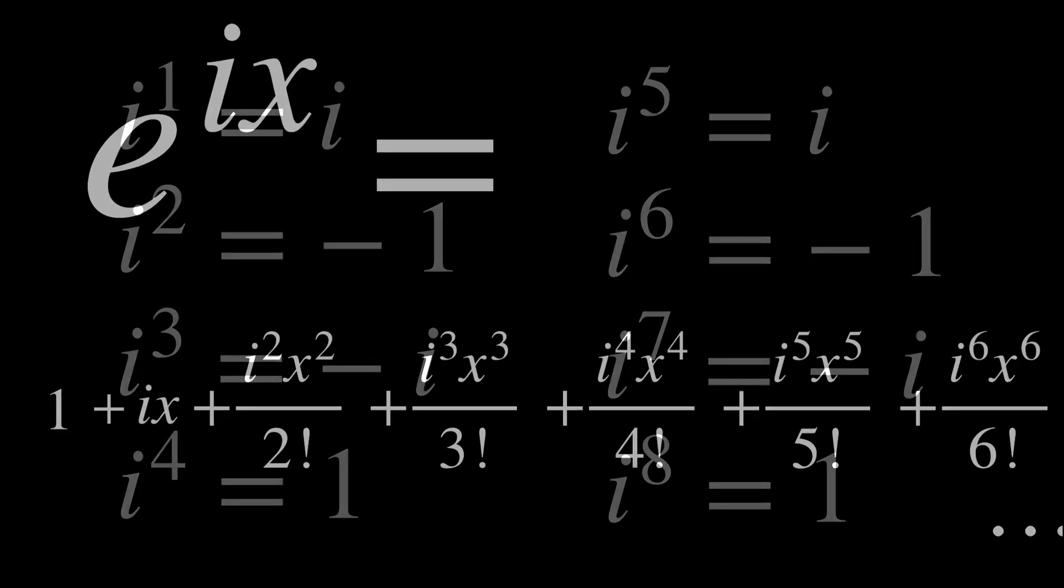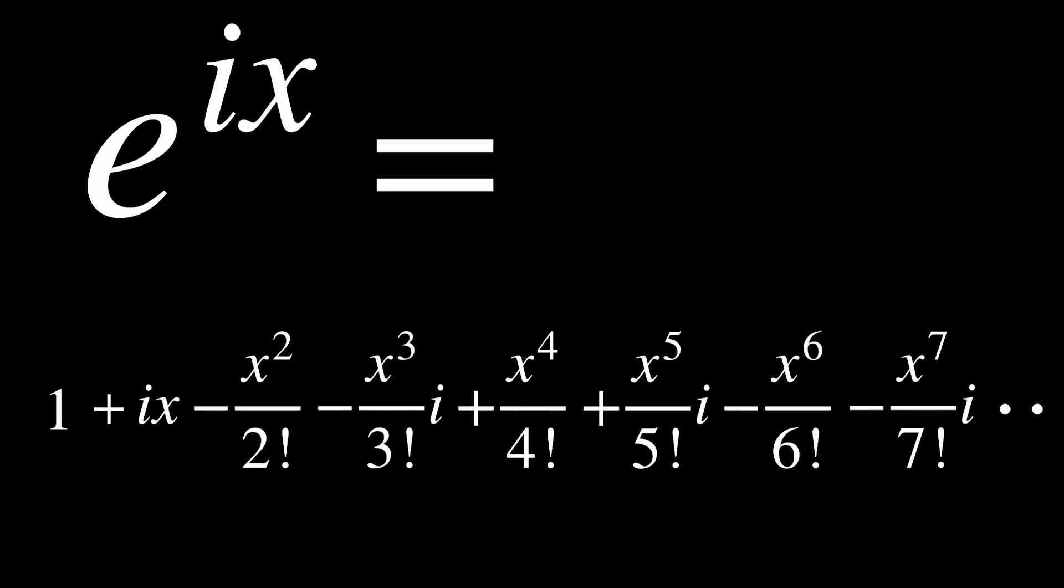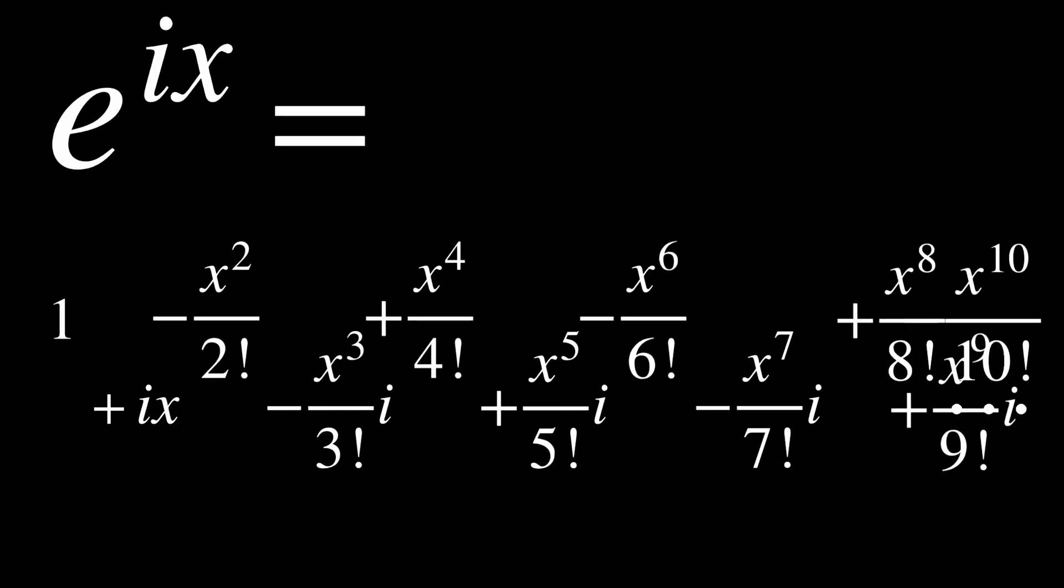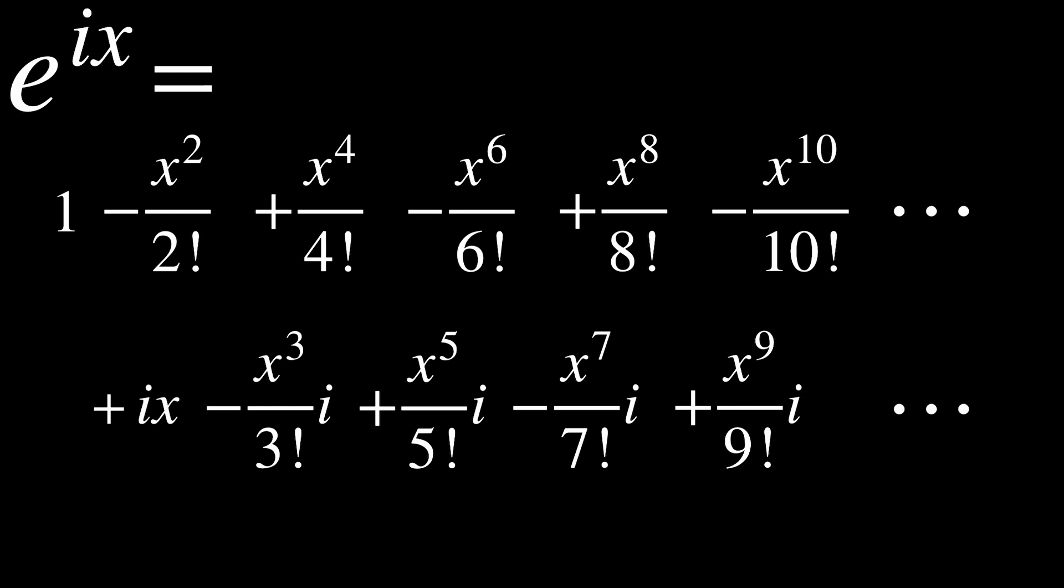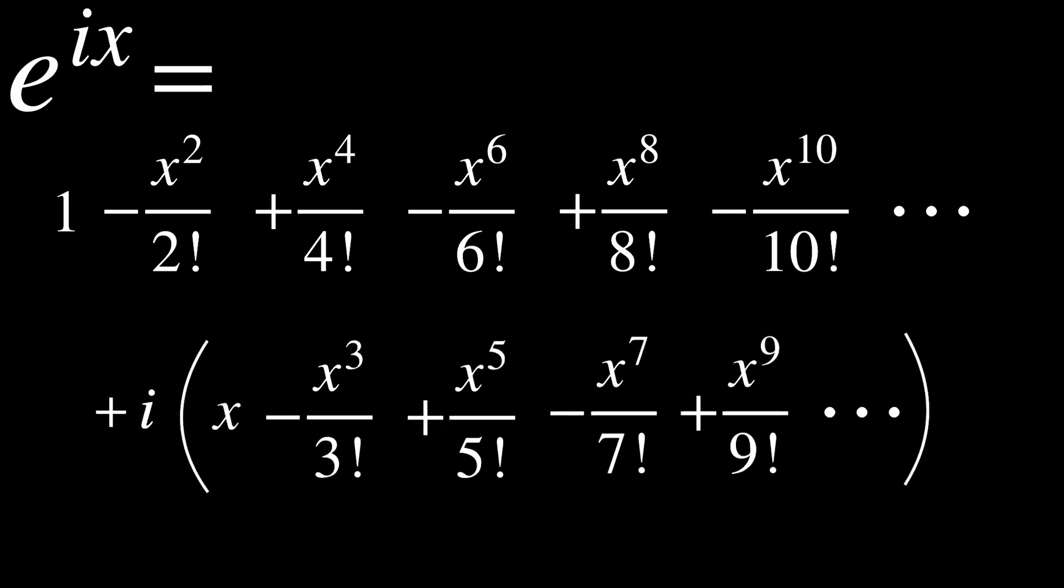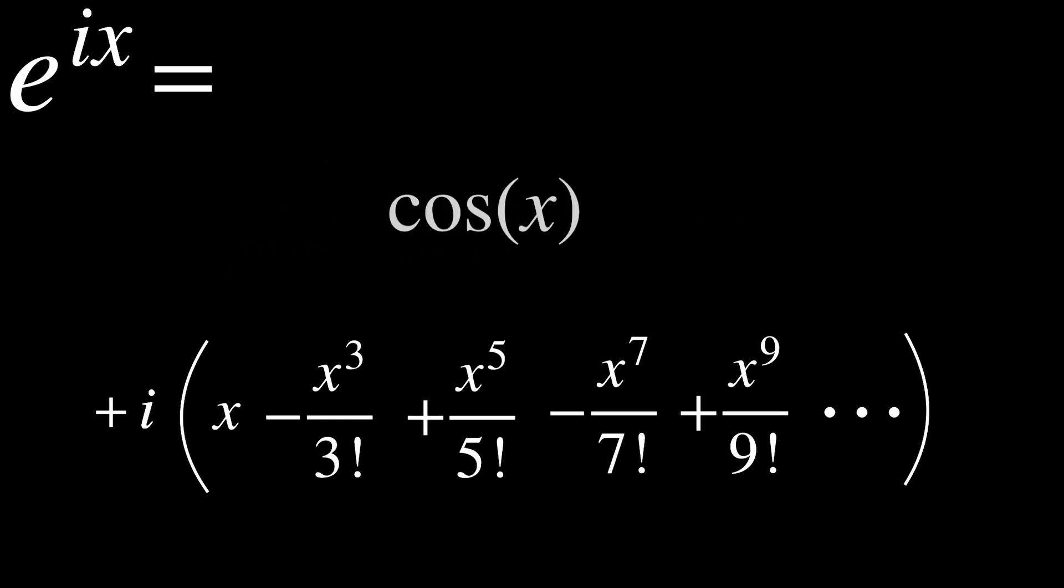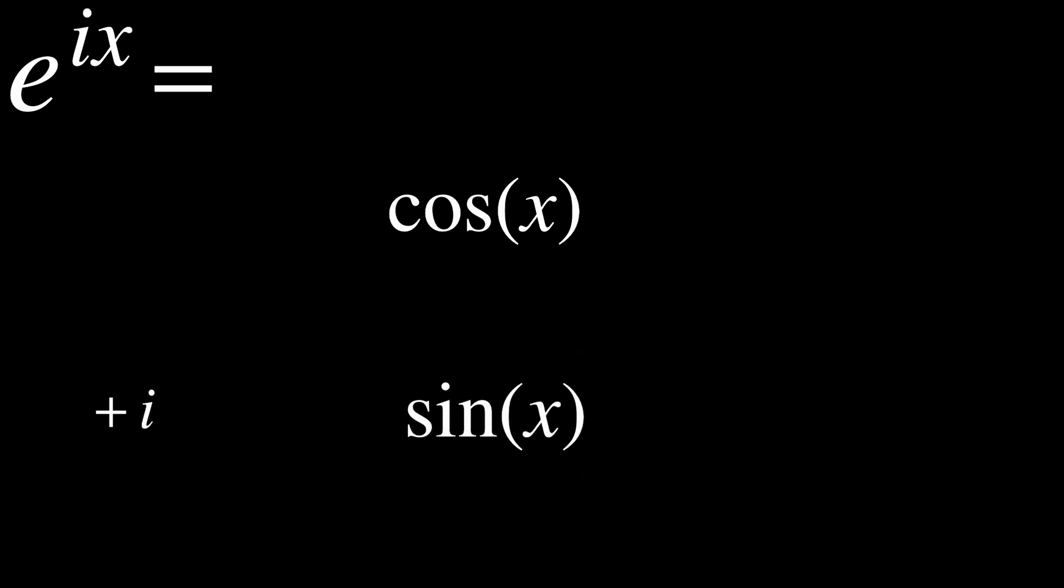We can use this to simplify our series. This is what it looks like now. Some of the terms are being multiplied by i and others are not, so let's separate them out. Here are the terms without i and here are the terms with i. Now, if you factor out an i from the bottom, these might start to look familiar to you. The top is the Taylor series for cosine of x and the bottom is the Taylor series of sine of x. So we get the following identity.